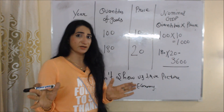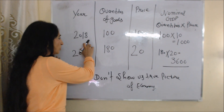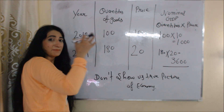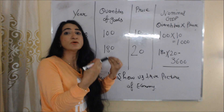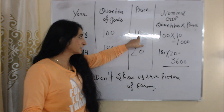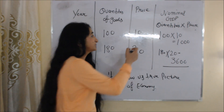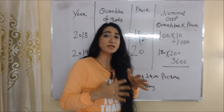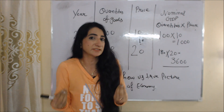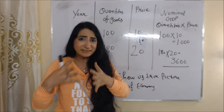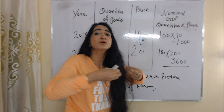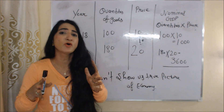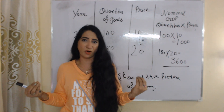Now please listen carefully. No doubt, from 2018 to 2019 our production increased from 100 to 180. But at the same time there is inflation because our price also increased — from 10 to 20, meaning there is 10 rupees of inflation. If inflation is included in this GDP, then how can we say this is the actual production of goods and services or the actual growth of our economy? That's why nominal GDP does not show us the true picture of our economy.